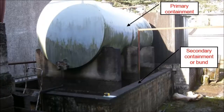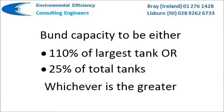The purpose of a bund is to provide secondary containment should the primary containment fail. The first consideration when designing a bund is to decide what the capacity of the secondary containment should be. The general rule in the UK and Ireland is that the bund capacity should be 110% of the largest tank or 25% of the total tank capacity, whichever is the greater. This rule can cause some confusion, so we will explain this with some examples.